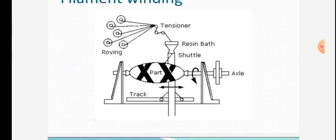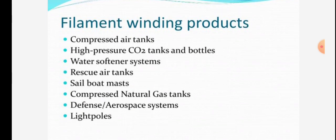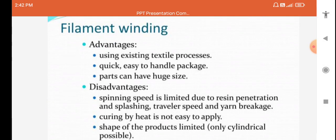The part to be manufactured is given with track and axial movement. Filament winding process applications include compressed air tanks, high-pressure CO2 tanks and bottles, water softener systems, scuba boat molds and masts, compressor natural gas tanks, defense aerospace systems, and light poles.